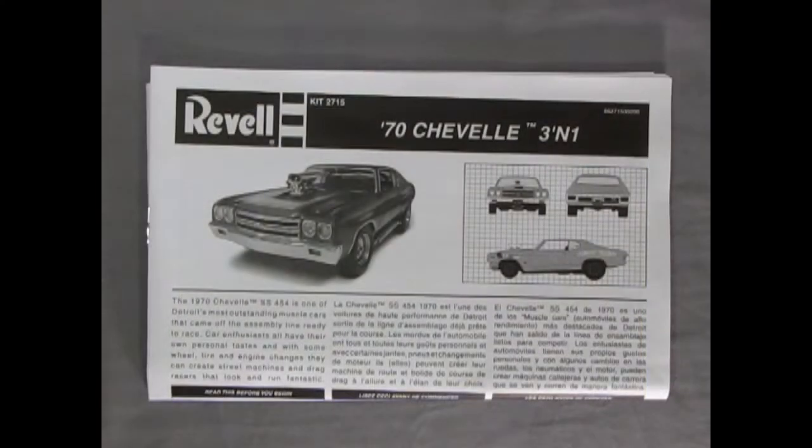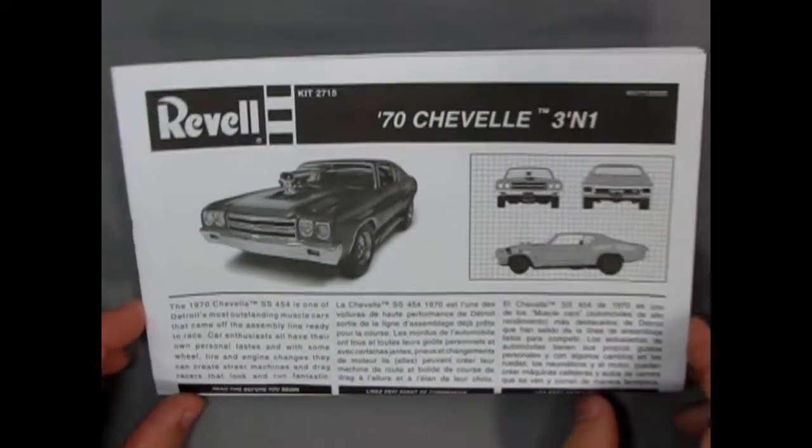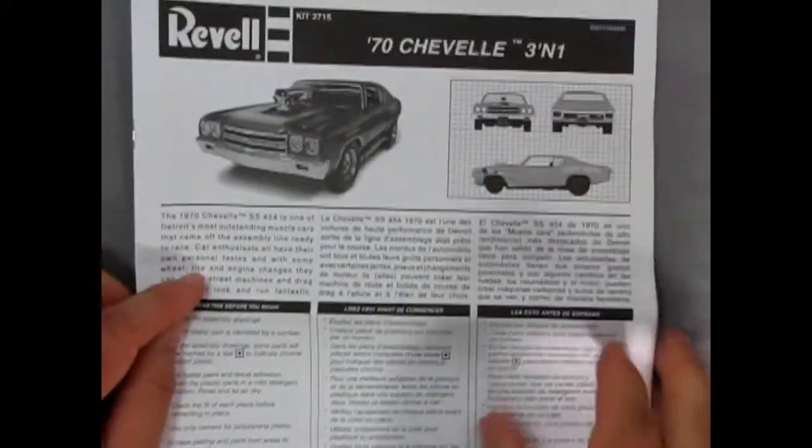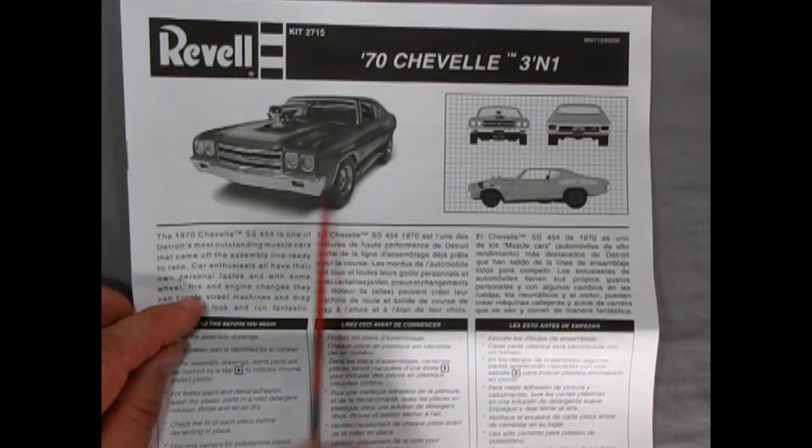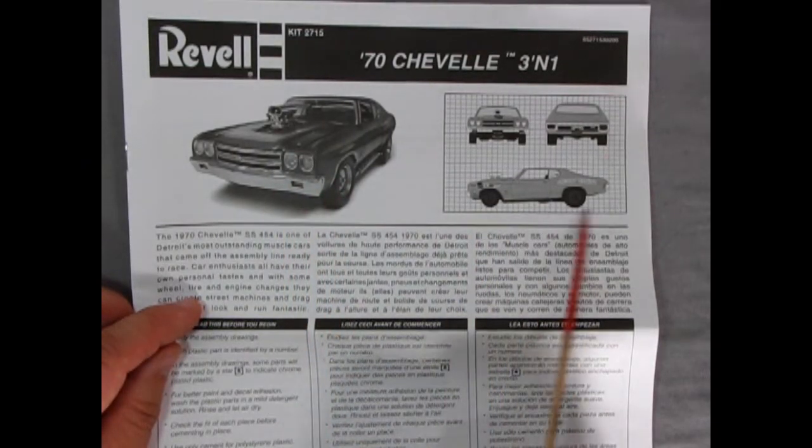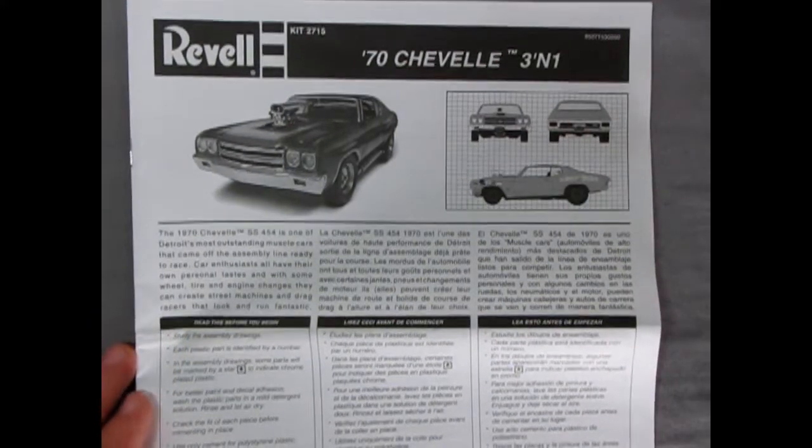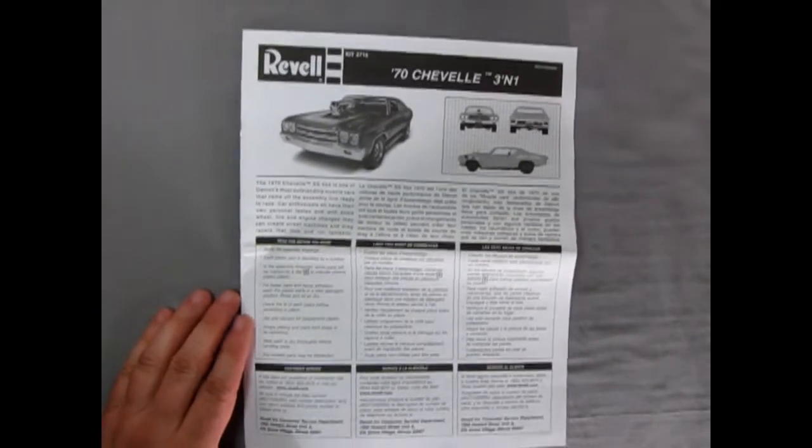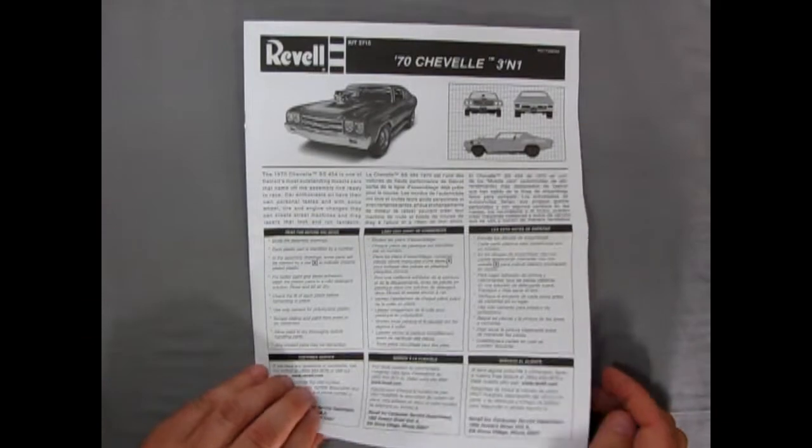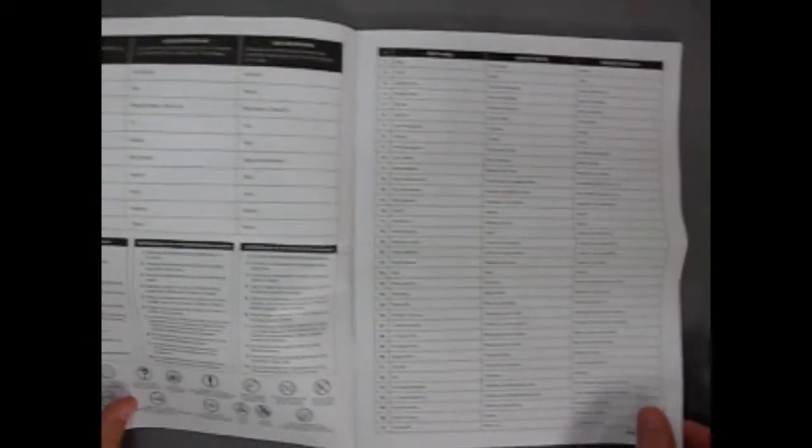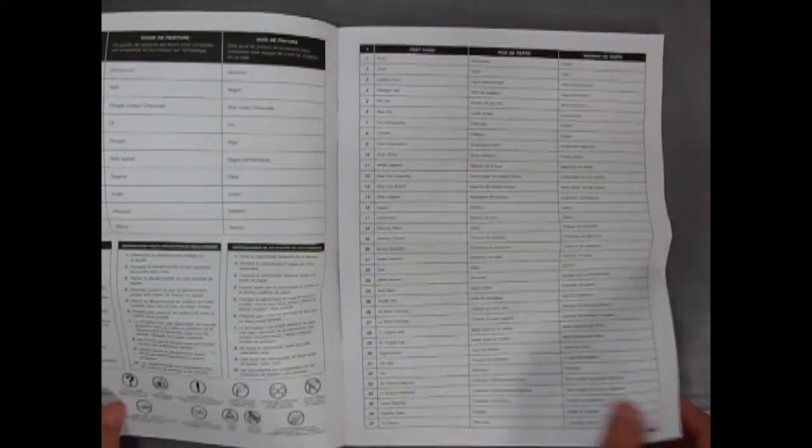To begin our review, we have this nice fold-out instruction sheet, which of course is quite large. You can see our 70 Chevelle built-up model kit here, as well as the blueprinted Dragster version. So let's zoom back a bit here so we can see these instructions in full panel detail. So to open them up, we get of course all our paint call-outs and the parts with the parts name.